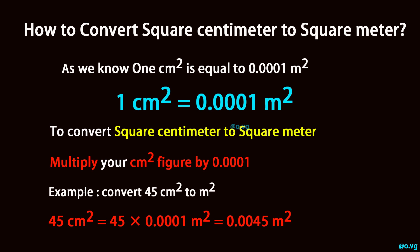Example: convert 45 square centimeter to square meter. 45 square centimeter is equal to 45 times 0.0001 square meter, equals 0.0045 square meter.